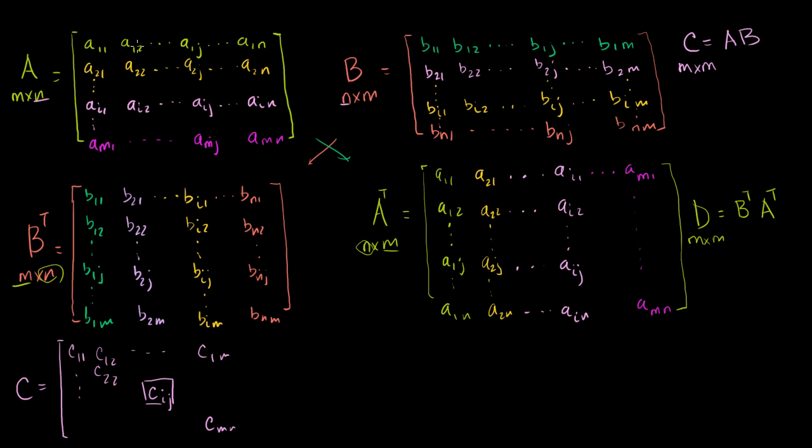We know that C is the product of A and B. So to get to a particular entry in C, and we've seen this before, so a particular entry in C, C_ij, it's going to be, you can view it as, the dot product of the i-th row in A with the j-th column in B, just like that.